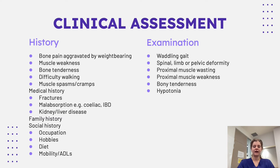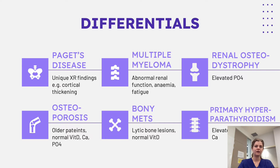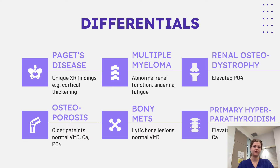When ruling out differentials, consider Paget's disease — on x-ray you'll see cortical thickening rather than diffuse thinning of trabeculae. Multiple myeloma will present with abnormal renal function, anemia, and fatigue. Renal osteodystrophy has a hallmark of elevated phosphate. Osteoporosis generally occurs in older patients with normal vitamin D, phosphate, and calcium. Bony metastases will show lytic bone lesions on x-ray with normal vitamin D. Primary hyperparathyroidism will present with elevated calcium.